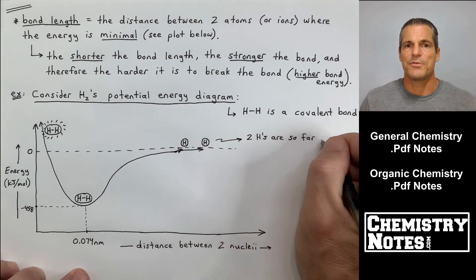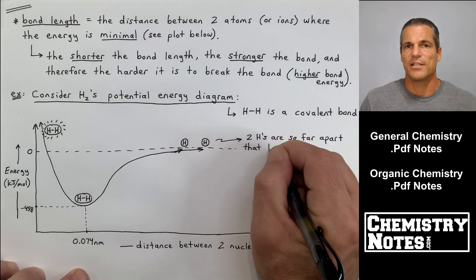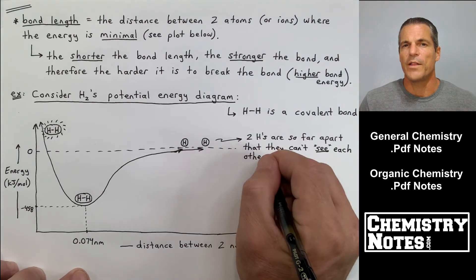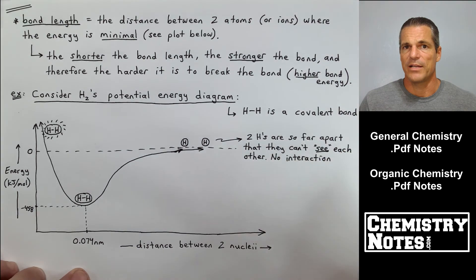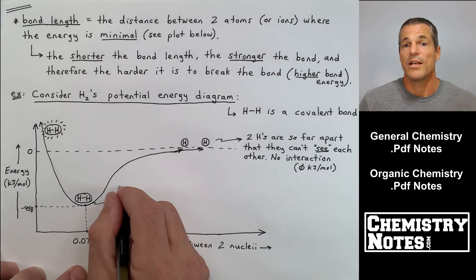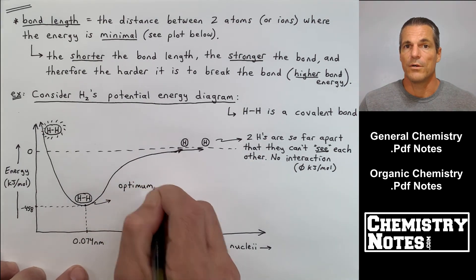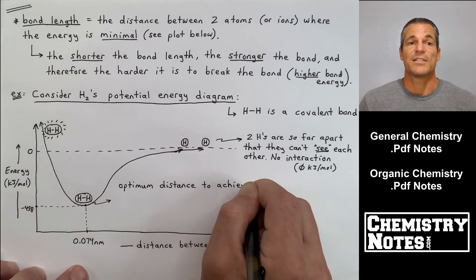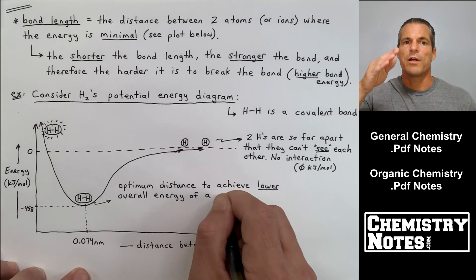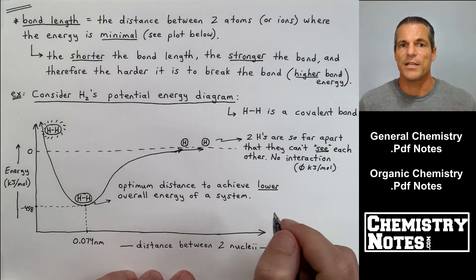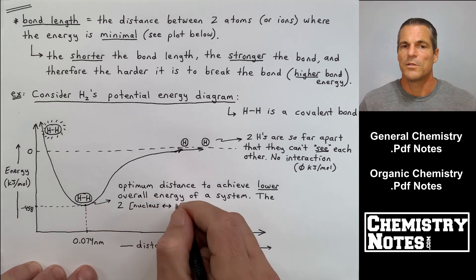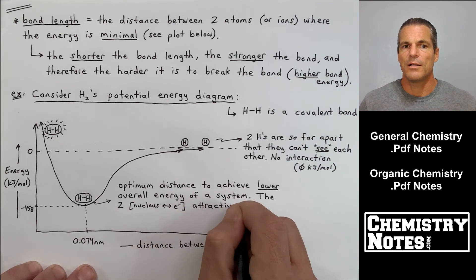Off to the far right where the energy is zero, that's essentially two free hydrogen atoms. I'm writing that down now in our notes: two H's are so far apart that they can't even see each other, so there's no interaction. That's what we give the value of zero kilojoules per mole. On the far left where energy is higher than zero, you see the stresses. At the bottom of the trough where energy is minimal, this is the optimum distance to achieve the lower overall energy of a system.